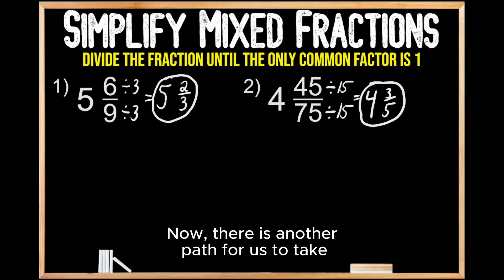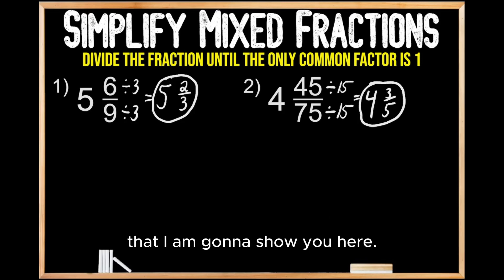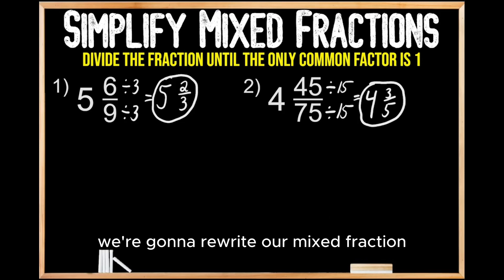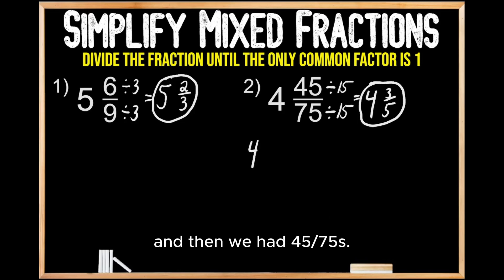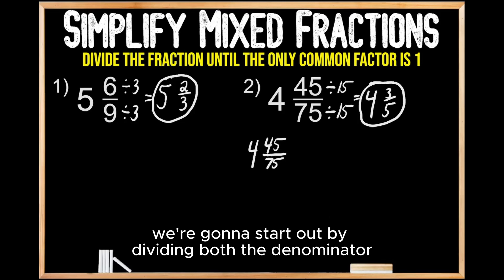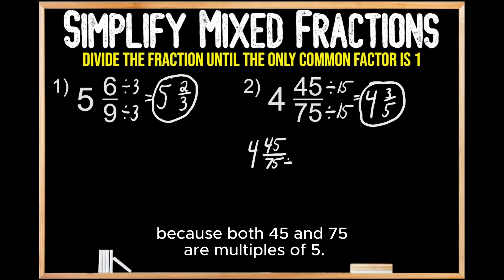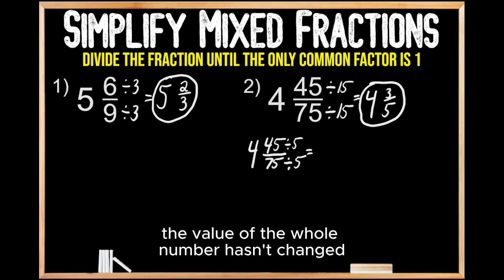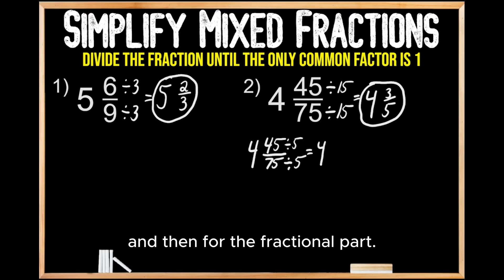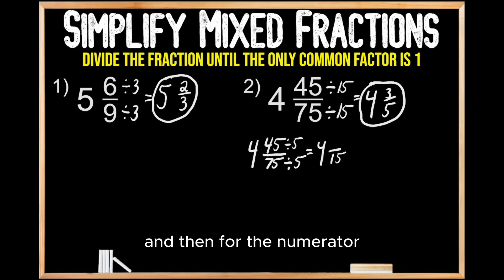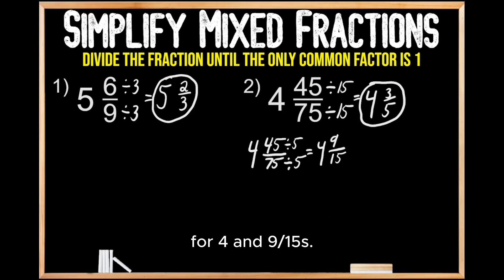There is another path for us to take to get to this same destination. Down below, we're going to rewrite our mixed fraction: four and forty-five seventy-fifths. This time, we're going to start out by dividing both the denominator and the numerator by the common factor of five, because both forty-five and seventy-five are multiples of five. The value of the whole number hasn't changed — it's still four. When we divide seventy-five by five, we're left with fifteen, and when we divide forty-five by five, we get nine, for four and nine-fifteenths.